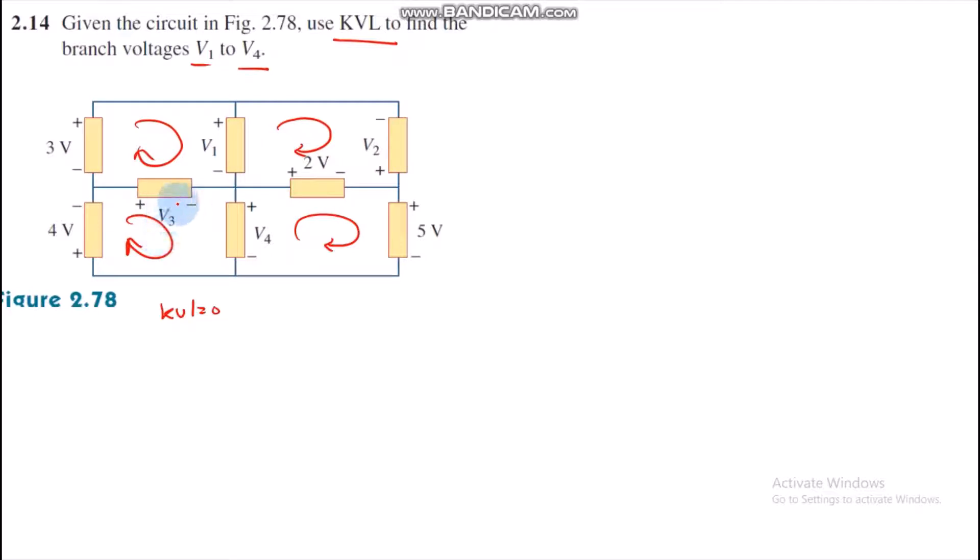In order to find voltage V4, we need to identify how many loops there are and which loops. So first of all, loop 1, which we are using, we solve this in order to find voltage V4.